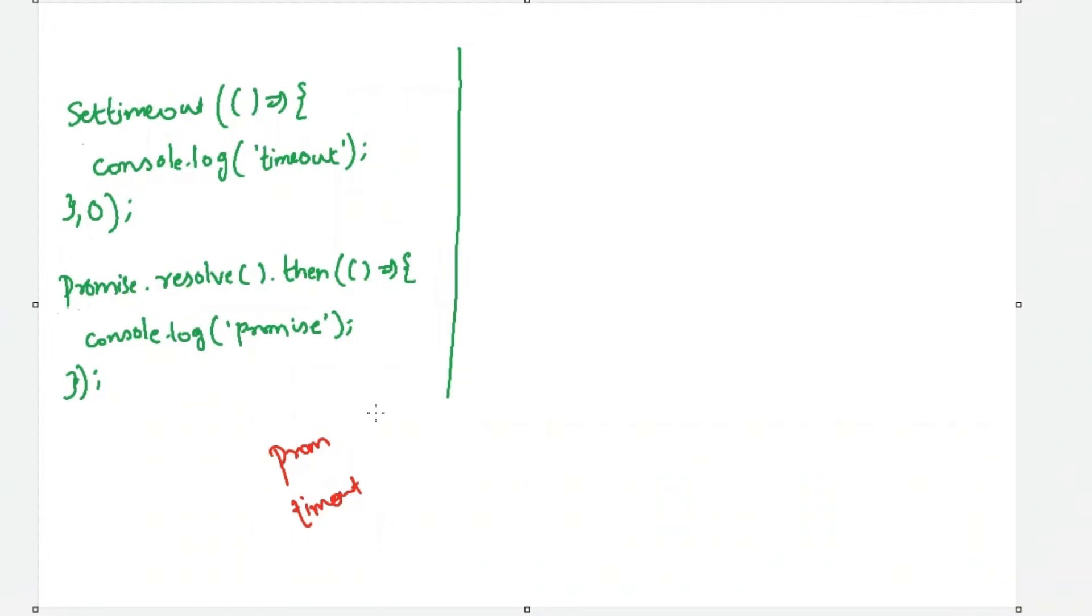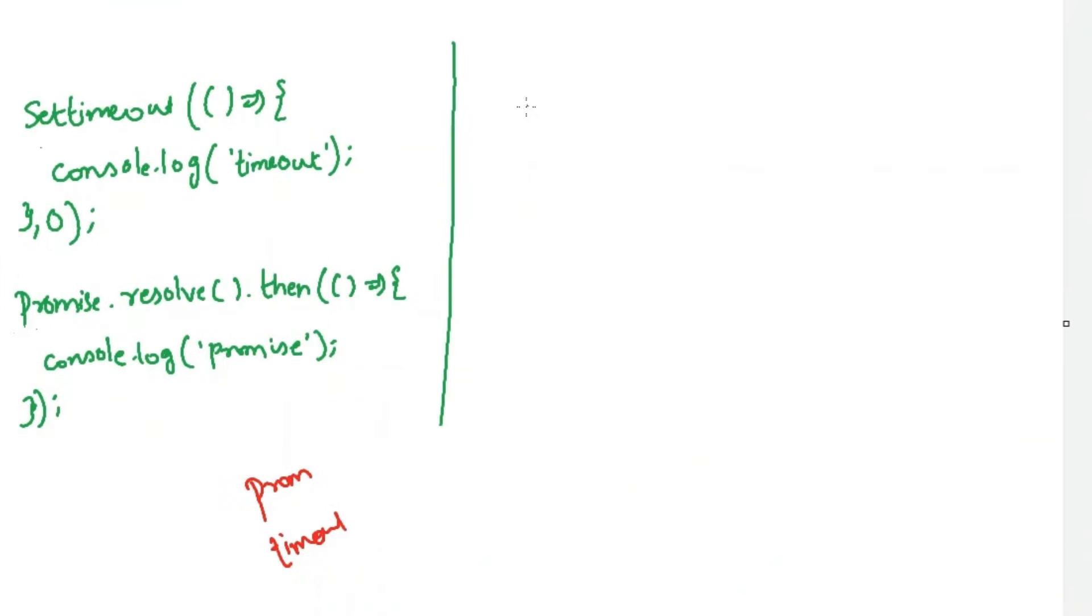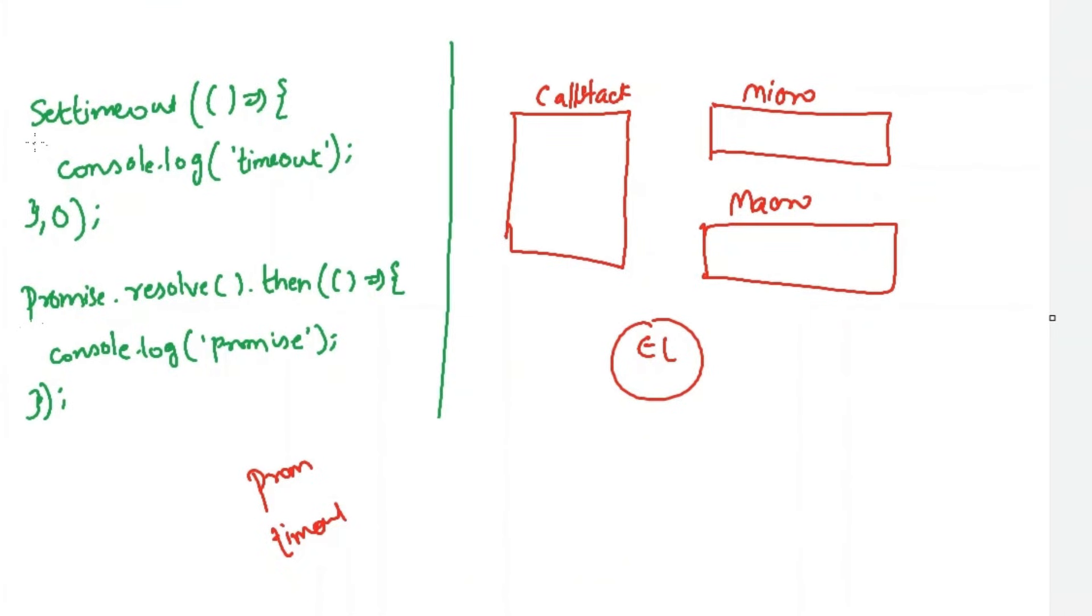Remember this diagram. This is very important. This is a call stack - even if you're not able to get it, remember this diagram, that's enough. This is a micro task queue, this is a macro task queue, and this is an event loop.